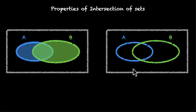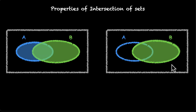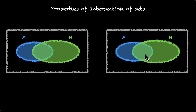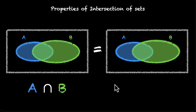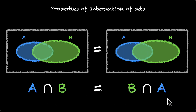If we go the other way around and start with B, then find its intersection with A — B intersection A — we still end up with this middle region. Both of them are the same, which means A intersection B is the same as B intersection A. This is called the commutative law.